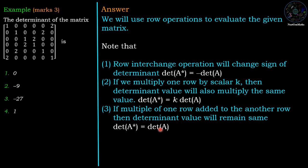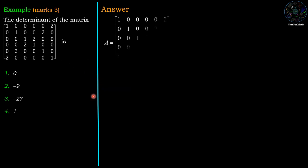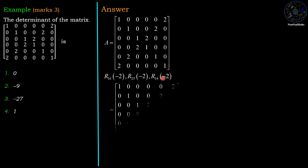So determinant of A star equals A. We will use this result to evaluate the determinant. Now for the given matrix we will apply three operations. First row operation R16-2, R25-2, R34-2. R16-2 means first row multiplied by minus 2 added to the sixth row.